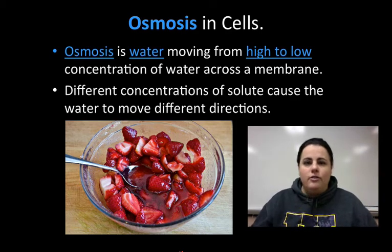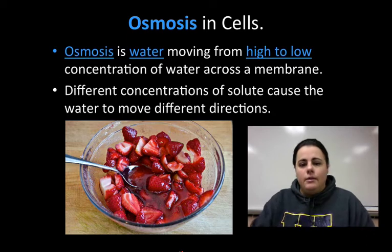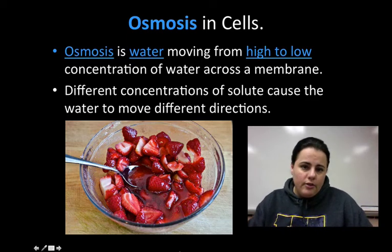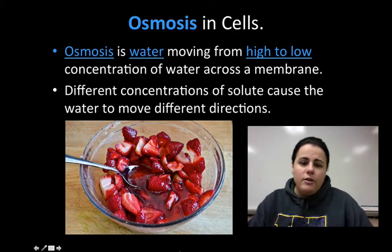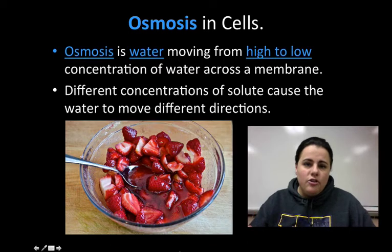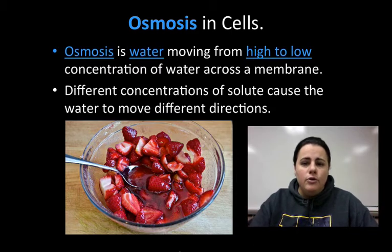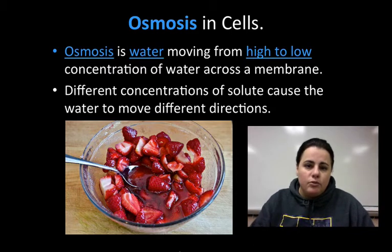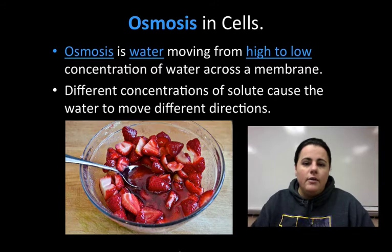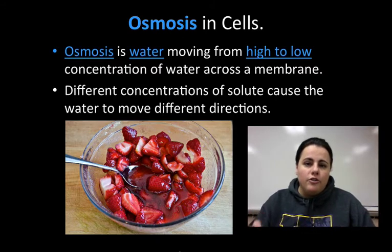So from a high to low concentration. In the picture, we can see these strawberries covered with sugar, and the strawberries are sitting within their juice. That's because there's a high concentration of sugar on the outside of those cells. Therefore, the water wants to move to that area because there's less water there. The different concentrations inside and outside of the cell will cause water to move in or out of cells.